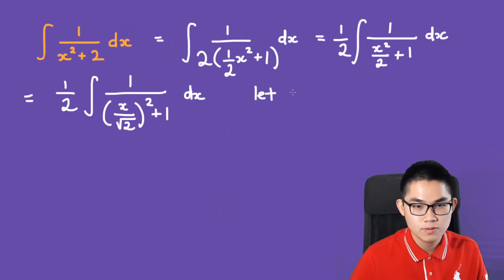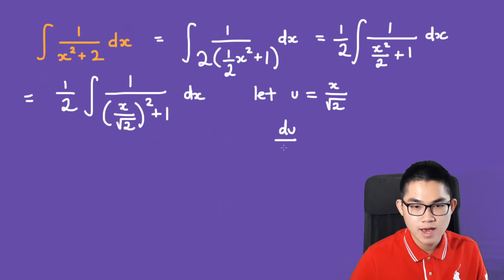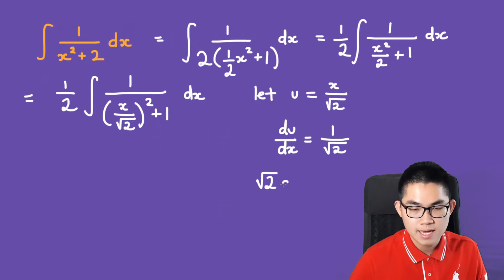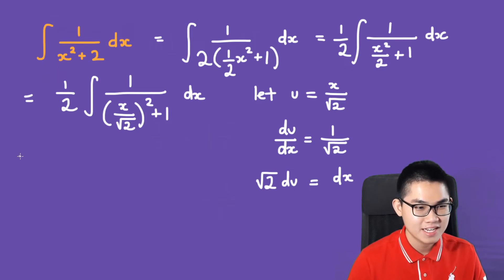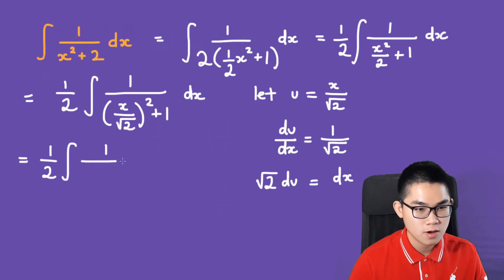We let u equal x over the square root of 2. Differentiating, du/dx equals 1 over the square root of 2, so the square root of 2 times du equals dx.